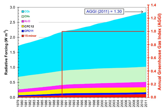The major atmospheric constituents — nitrogen, oxygen, and argon — are not greenhouse gases because molecules containing two atoms of the same element such as N2 and O2 have no net change in the distribution of their electrical charges when they vibrate, and monatomic gases such as argon do not have vibrational modes. Hence they are almost totally unaffected by infrared radiation.